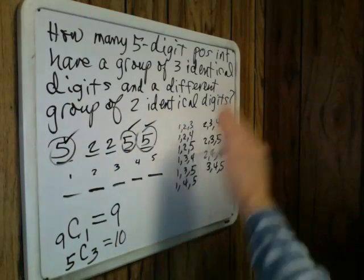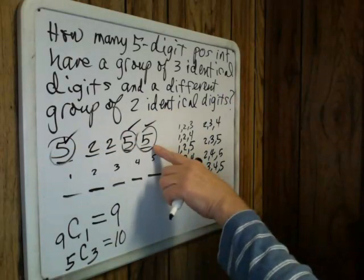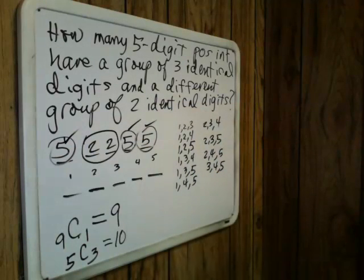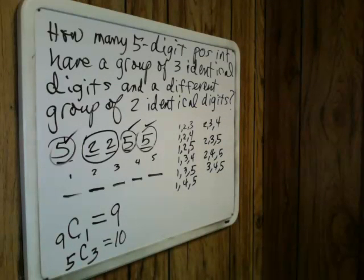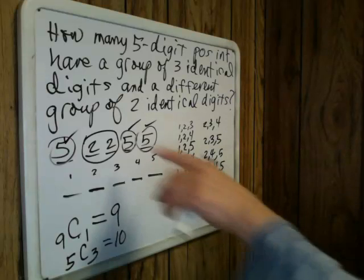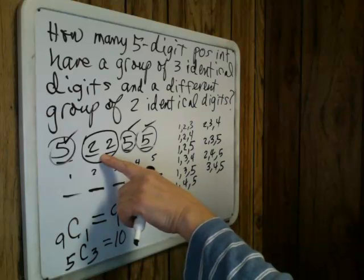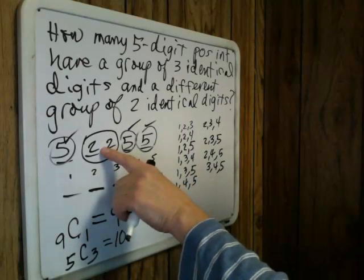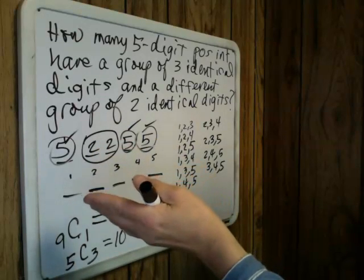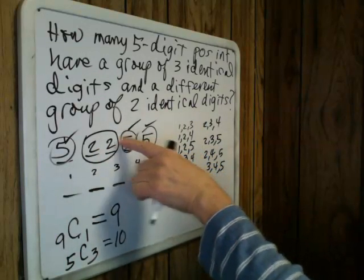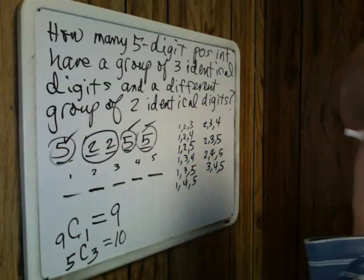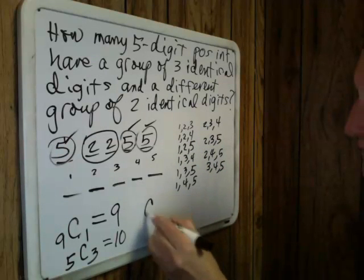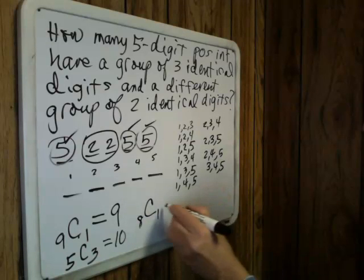Once we've selected one of those placements, the remaining group of two identical digits has no option — it has to occupy whatever slots are left. How many choices do we have for the remaining digits? We're not using zero, and we can't use the digit already in the group of three, so there are eight possibilities remaining. We choose one from a group of eight, which is just eight.